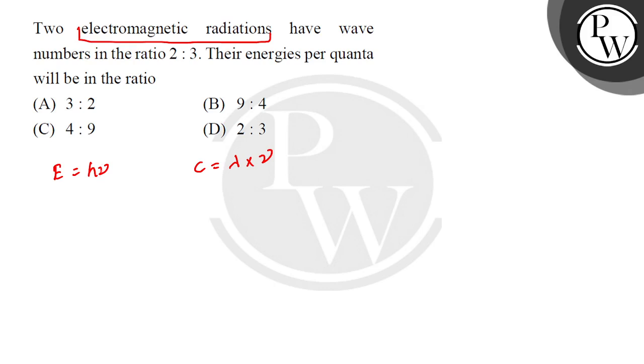And the ν frequency means that in one time period, how many waves are moving in one time. That is what frequency is. C represents speed of light, right, speed of light, and your λ represents wavelength.